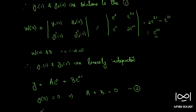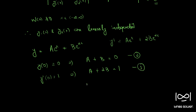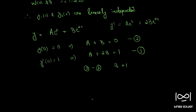y'(0) = 1. The derivative equation is y' = ae^x + 2be^(2x). From this, y'(0) = 1 means a + 2b = 1. Let this be equation three. Subtracting equation two from equation three, we get b = 1. From equation two, a + b = 0, so a = -b = -1.